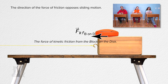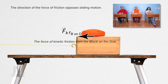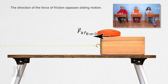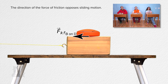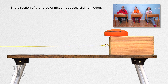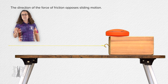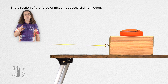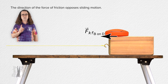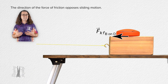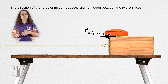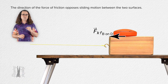I don't get it. You can clearly see the disk is moving to the left in the video. If the disk is moving to the left, how can the force of kinetic friction also be to the left? I thought the force of friction opposes sliding motion. Let's motion track the video to make the block stationary in the video. That makes it so we can observe the motion of the disk relative to the motion of the block. Now you can see that the disk is moving to the right relative to the block. The force of kinetic friction opposes the sliding motion between the two surfaces.